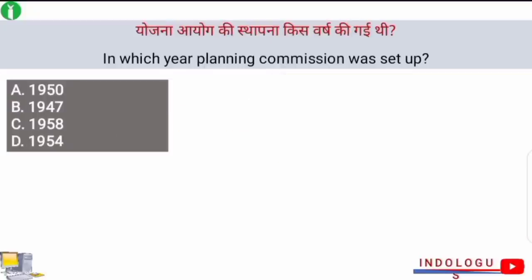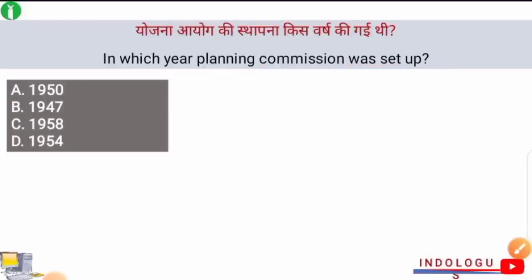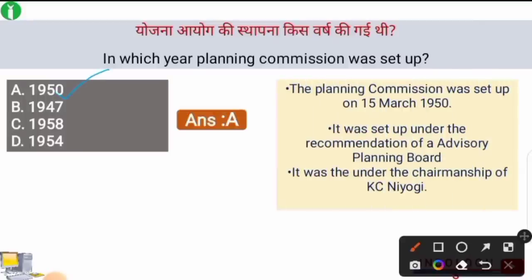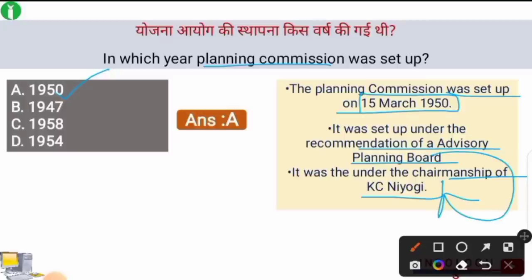Next question: In which year was the Planning Commission set up? The right answer is option A — 1950. The Planning Commission was set up on 15th March 1950 under the recommendation of an advisory planning board, which was under the chairmanship of K.C. Neogi.